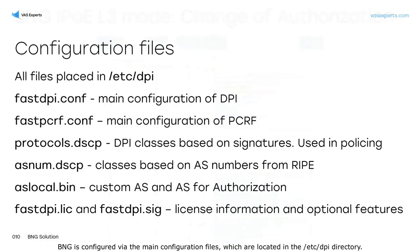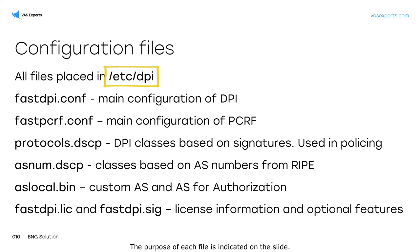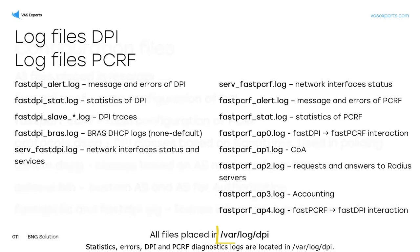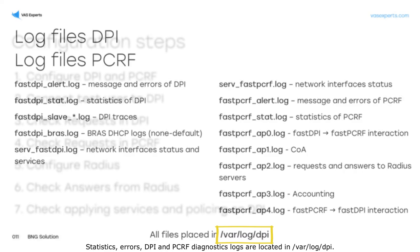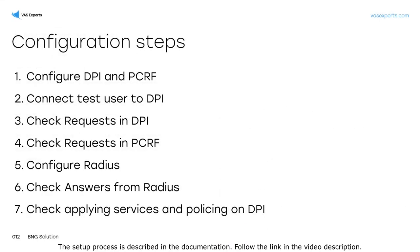BNG is configured via the main configuration files, which are located in the /etc/dpi directory. The purpose of each file is indicated on the slide. Statistics, errors, and DPI and PCRF diagnostics logs are located in /var/log/dpi. The setup process is described in the documentation.